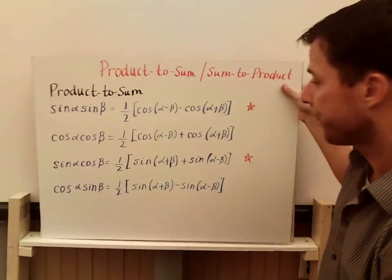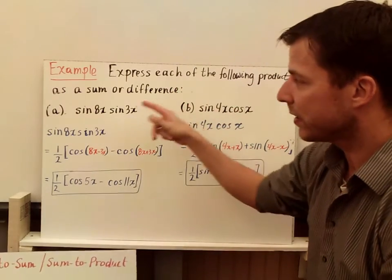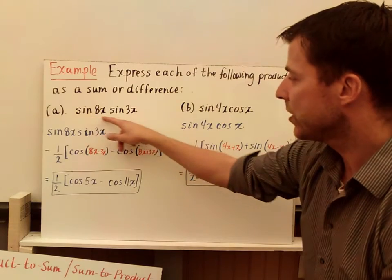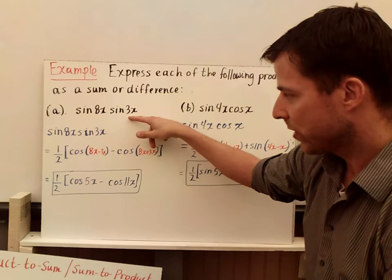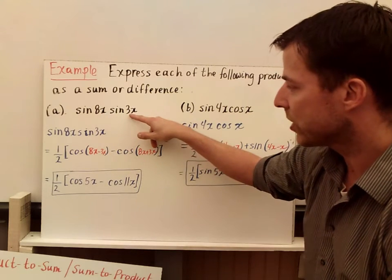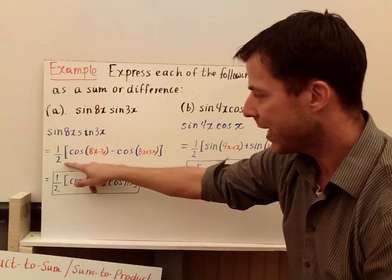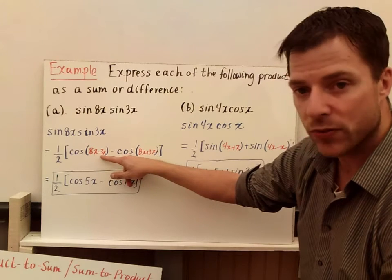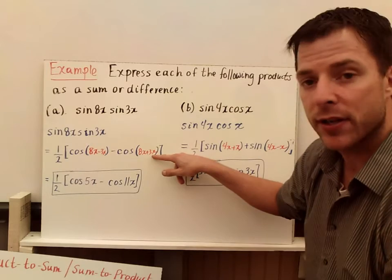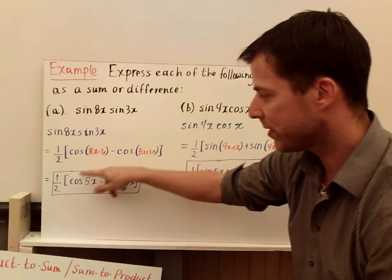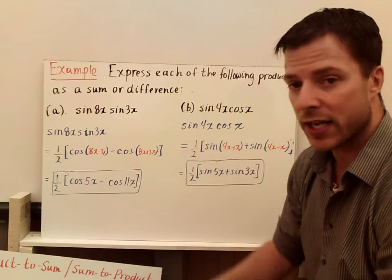Let's take a look at an example. It asks us to express each of the following products as a sum or a difference. We're using this first one here, sine of 8x times sine of 3x. So the idea here is our alpha would be 8x, our beta is going to be 3x. So when we look at this, I rewrite my problem, and then I'm going to say one half times the cosine of 8x minus 3x minus cosine times the quantity of 8x plus 3x. And then I'll simplify what's in parentheses, so I'll have one half times the cosine of 5x minus cosine of 11x, and I'll close that off.